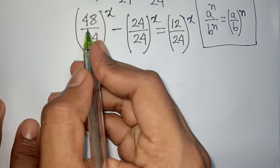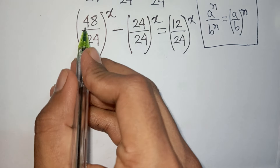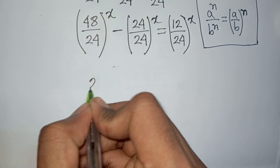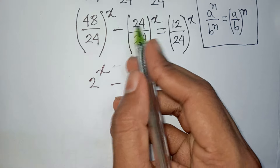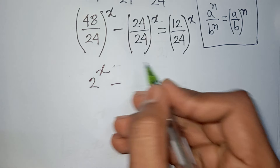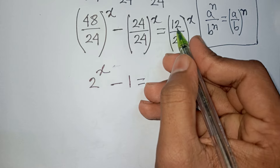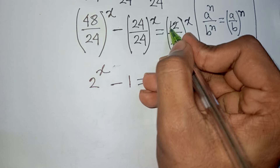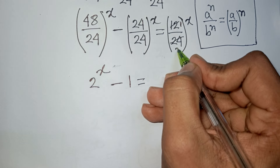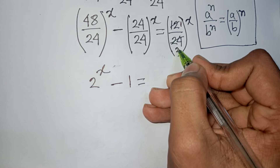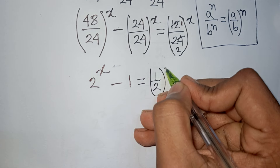Now, simplifying: 48 divided by 24 is 2, so the first term is 2^x. Then 24 divided by 24 is 1, so the second term is 1^x, which equals 1. And 12 divided by 24 is 1/2, so the right side is (1/2)^x.